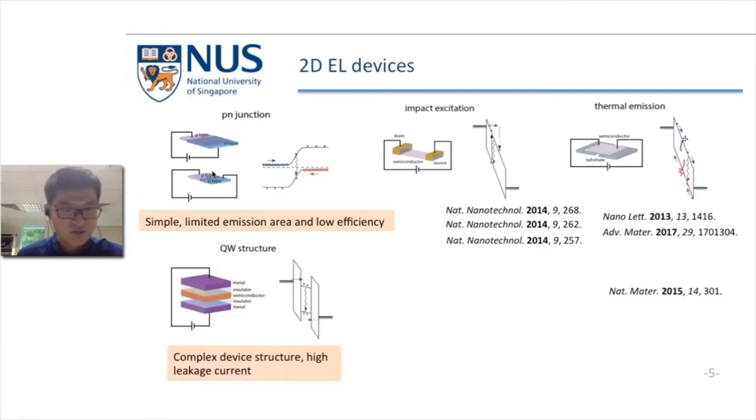Quantum well structures have been proposed to achieve planar emission. For example, a thin layer h-BN can be used to encapsulate the semiconductor monolayer and inject electrons and holes simultaneously to the semiconductor. However, for this type of device, typically the h-BN thickness is chosen to be quite thin, and the confinement effect to the carriers in the semiconductor is limited, bringing large leakage current.